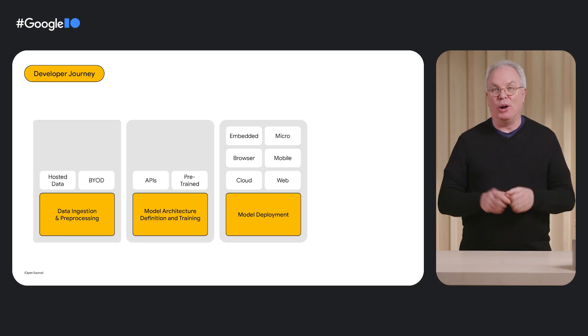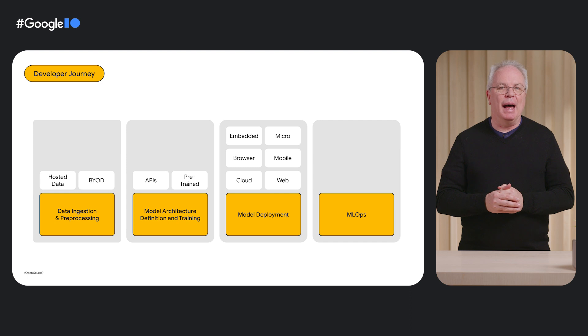Now, most of the time — and in particular when you're just starting out on your journey — this might look like you've reached the end. You've gotten your data, you've trained your model, and you've deployed it where people can use it. But in reality, your job is really only beginning at this point, because once the model is deployed and people are using it, you can gather data about what works and what doesn't, and then you can use that to continually improve your model. This process is called ops, or in the case of ML, it can generally be referred to as MLOps.